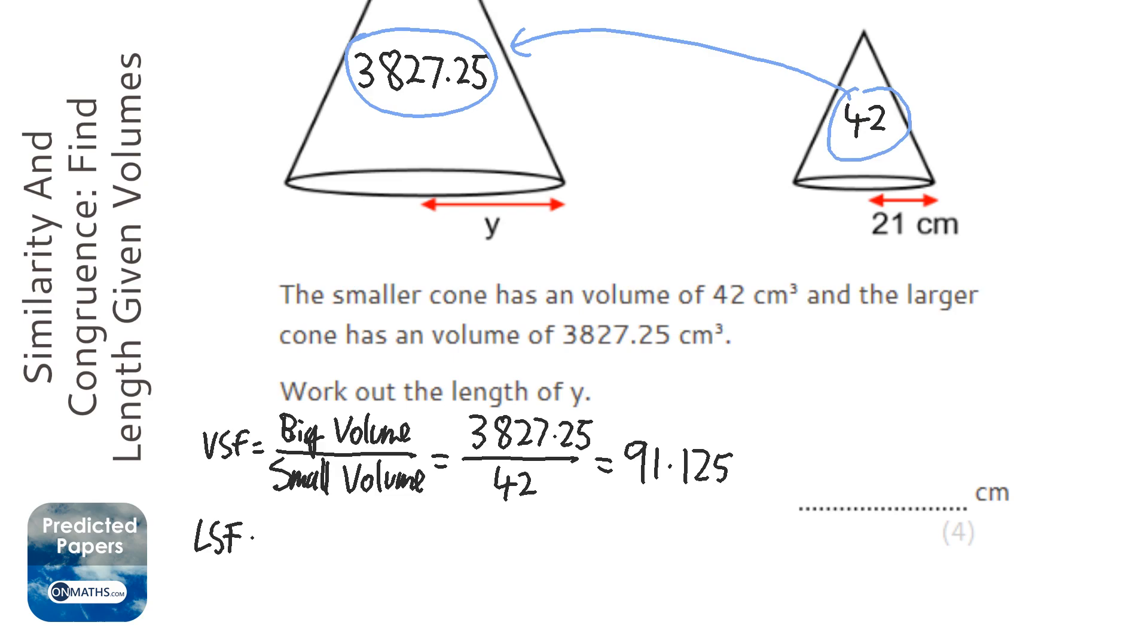Okay, now we need to work out what the linear scale factor is, because we're working out what changes about the radius of the circle at the bottom. At the moment the smaller one's 21, and we've got to find out what it is on the bigger one.